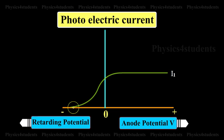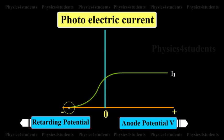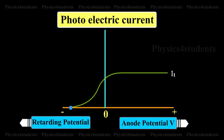If the negative or retarding potential is further increased, the photocurrent decreases and finally becomes zero at a particular value. Thus, the minimum negative potential given to the anode for which the photoelectric current becomes zero is called the cutoff or stopping potential.